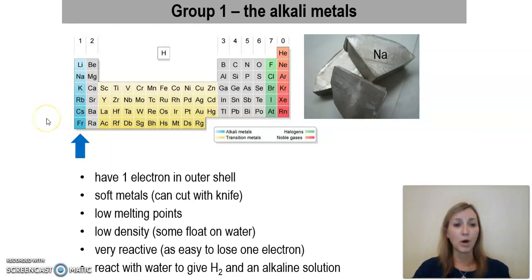All of these elements have one electron in their outer shell, which explains why they have similar chemical properties and undergo the same type of reactions with other substances. They're very soft metals, they can in fact be cut with a knife, which we'll see an example of in the next lesson. They have low melting points and low density, some of them can even float on water, and they react with water to give H₂ and an alkaline solution.